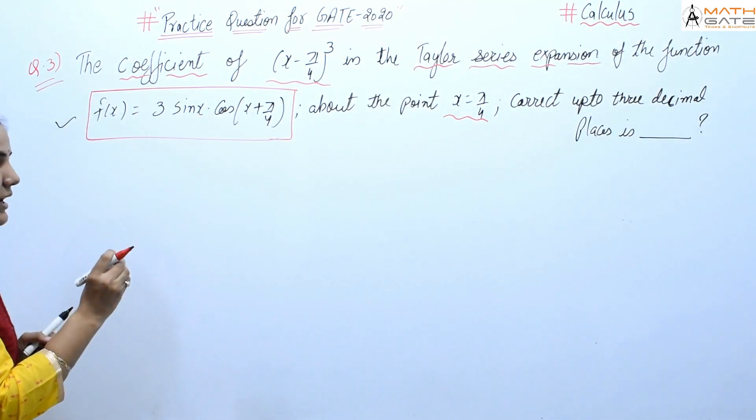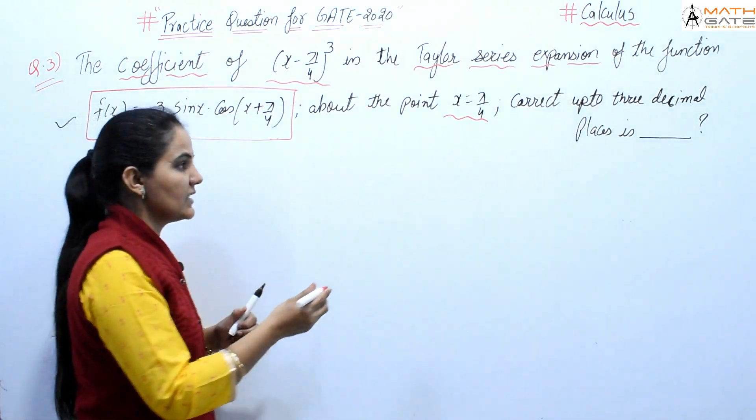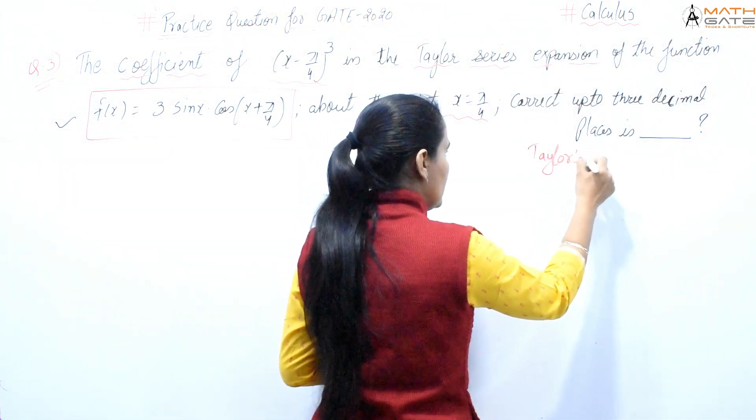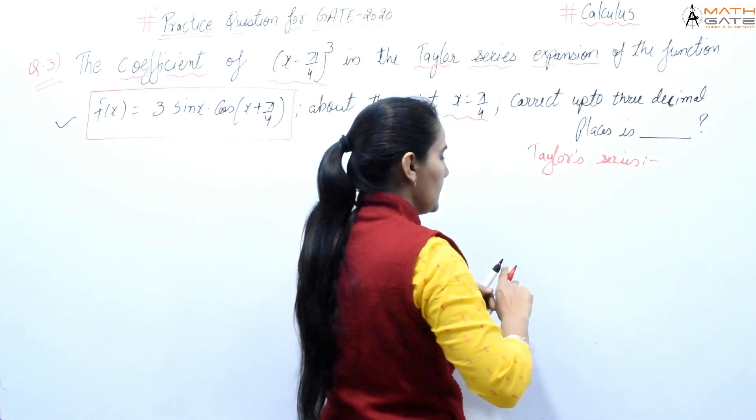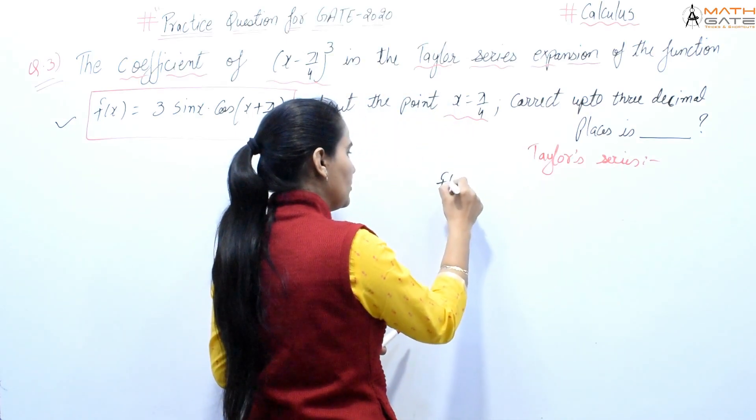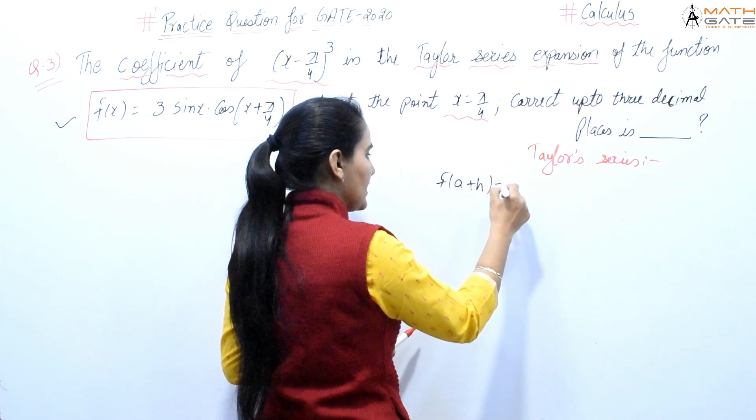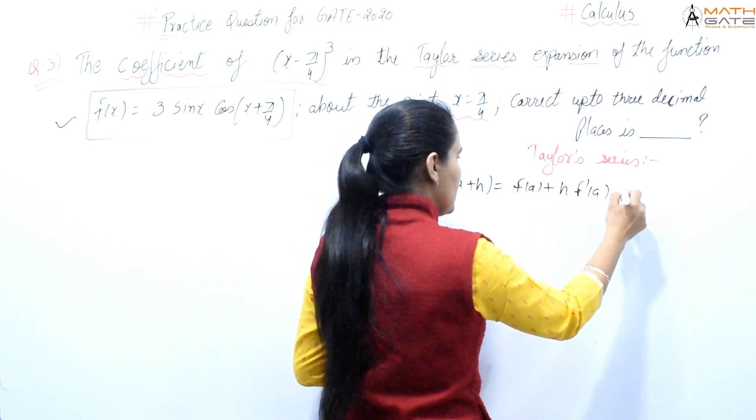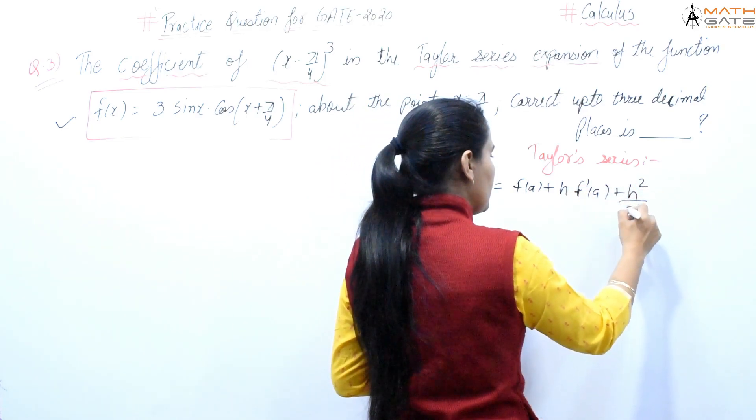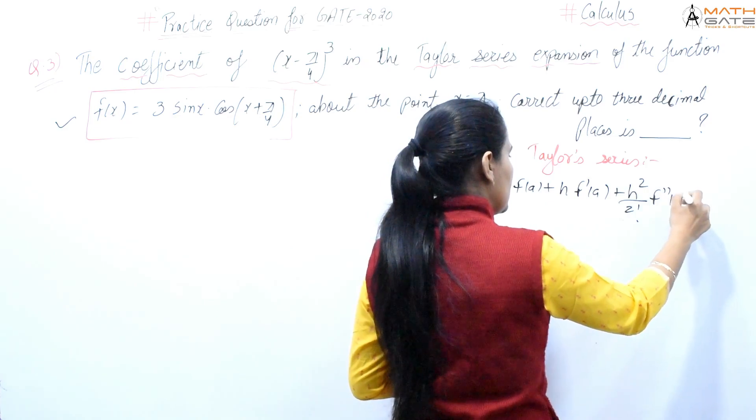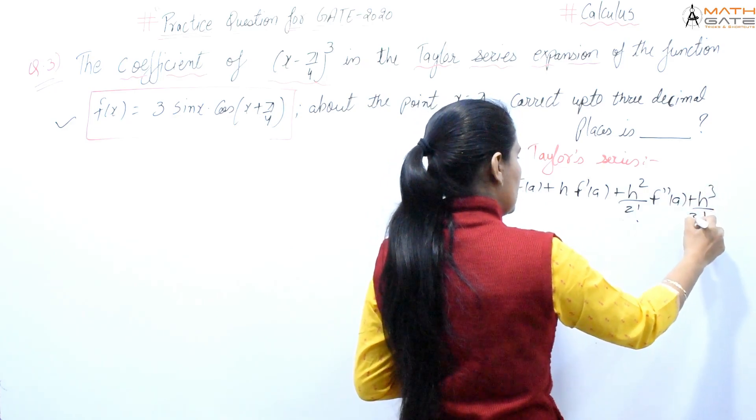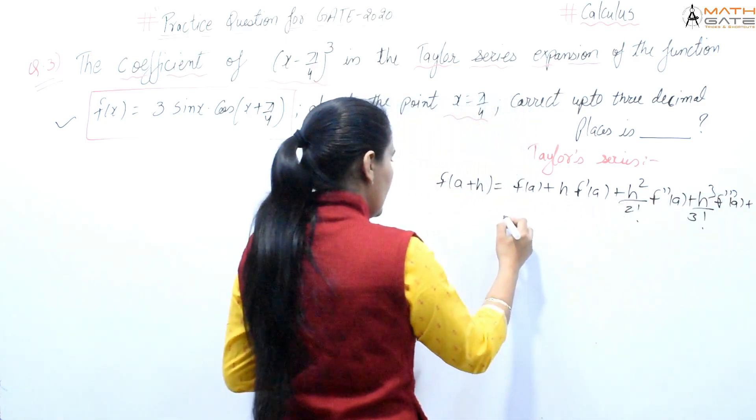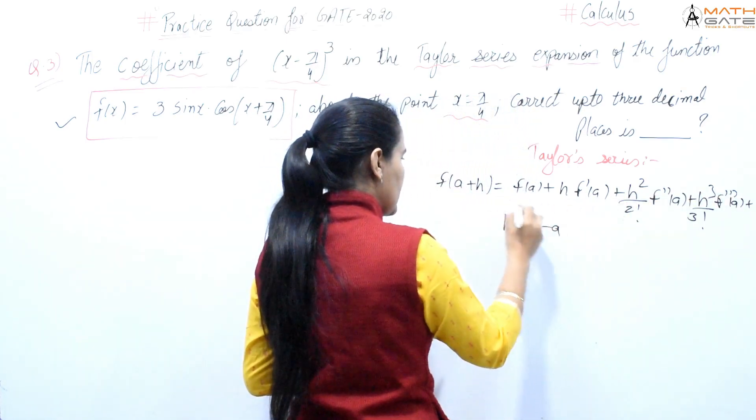First, you need to know what is Taylor series. The Taylor series expansion, if we find at x = a, is f(a+h) = f(a) + h·f'(a) + (h²/2!)f''(a) + (h³/3!)f'''(a) and so on, where h = x - a.